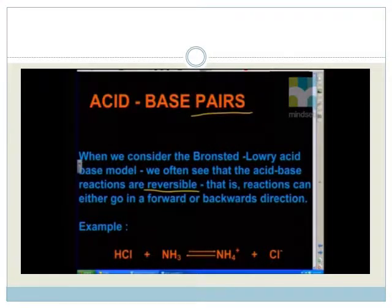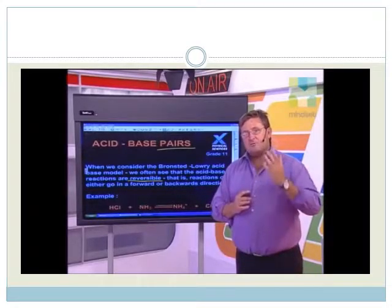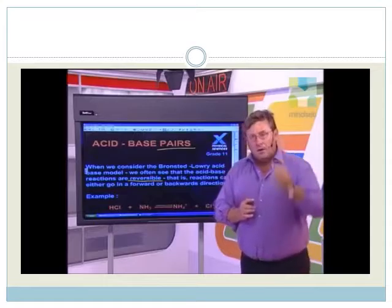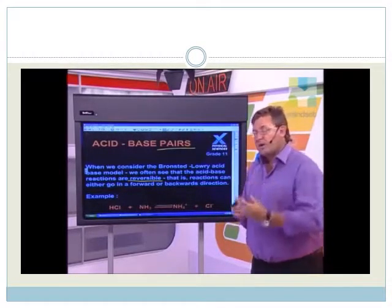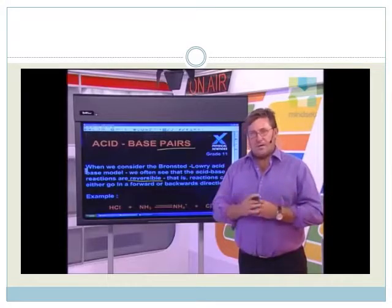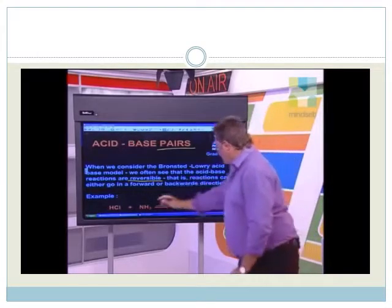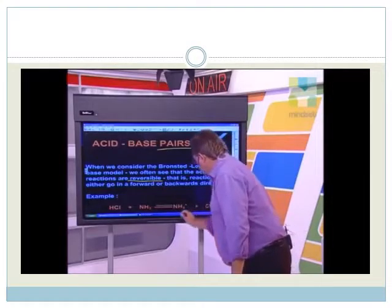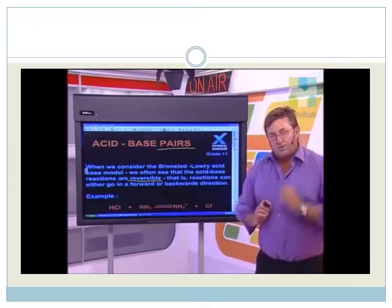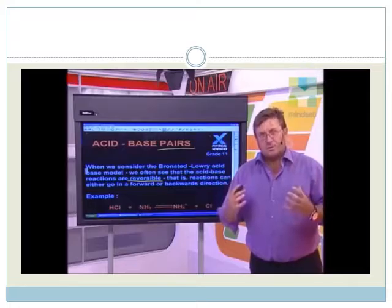Reactions can either go forwards or in the backwards direction. Reversible reactions are reactions that are able to move forwards and backwards, and a lot of acid-base reactions are able to do this. In grade 12 you will look carefully at reversible reactions when you do chemical equilibrium. For now, all I want you to understand is that acid-base reactions can go forward — left to right — or they can go back — right to left. Because of this, we are able to identify something called an acid-base pair within the reversible acid-base reaction.